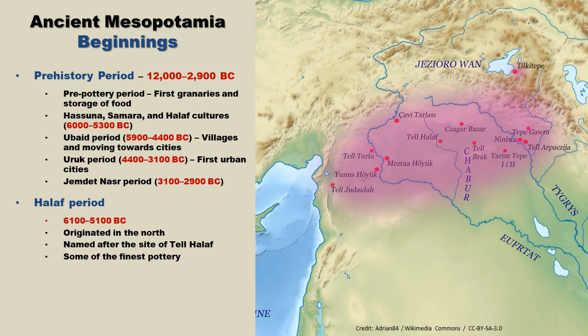One of the earliest Mesopotamian cultures identified through its pottery is the Halaf culture. The Halaf period existed primarily from 6,100 BC to 5,100 BC, and originated in the north. The period is named after the site of Tel Halaf, excavated in the early 20th century. Buildings were usually constructed out of mud brick, along with circular structures. The Halaf pottery was highly distinctive — considered some of the finest prehistoric pottery — often produced by specialists using geometric and animal motifs. The Halaf people also used tools made of stone and clay.